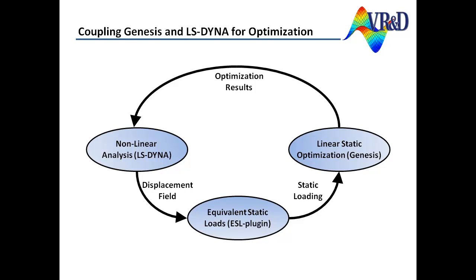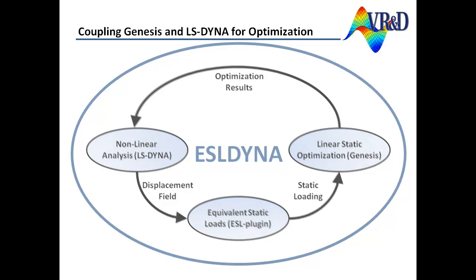The Equivalent Static Loads, or ESL method, takes advantage of the ability of the Genesis linear structural optimization program to solve large scale optimization problems while using the responses from a nonlinear finite element analysis, such as a crash simulation. ESL Dyna is an implementation of the ESL method to seamlessly perform optimization based on an LS-Dyna nonlinear analysis with Genesis as the structural optimization program.